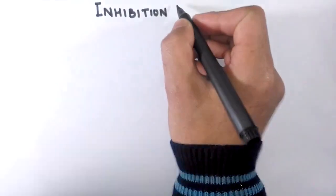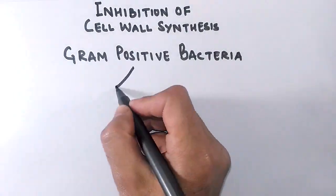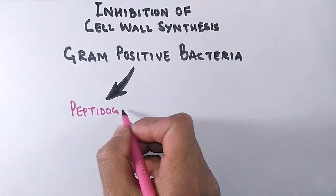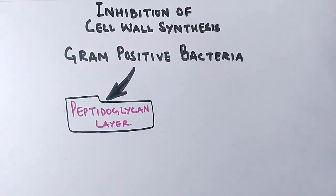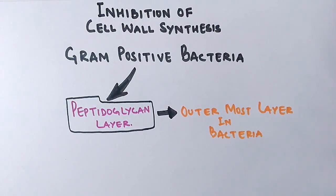There is also inhibition of cell wall synthesis by antibiotics, which mostly occurs in gram-positive bacteria because antibiotics target the peptidoglycan layer. This peptidoglycan layer is mostly present in gram-positive bacteria in large quantity, whereas it's present in gram-negative bacteria at 5 to 10 percent on the inner side. In gram-positive bacteria, it's present on the outer side of the cell wall.